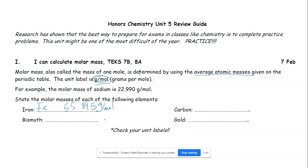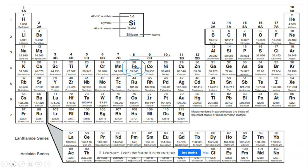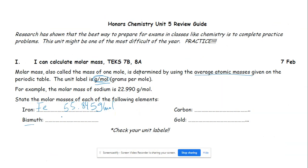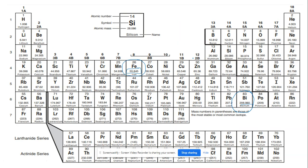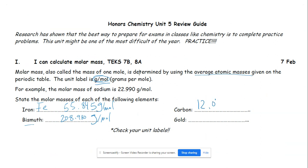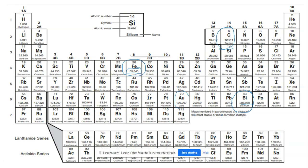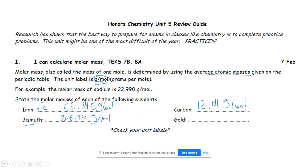For bismuth, I go look at the periodic table — bismuth is element 83, all the way down here. Its mass is 208.980 grams per mole. Carbon is an easy one you've probably already memorized: 12.011 grams per mole. And gold is here in the bottom-middle of the periodic table: 196.967 grams per mole.